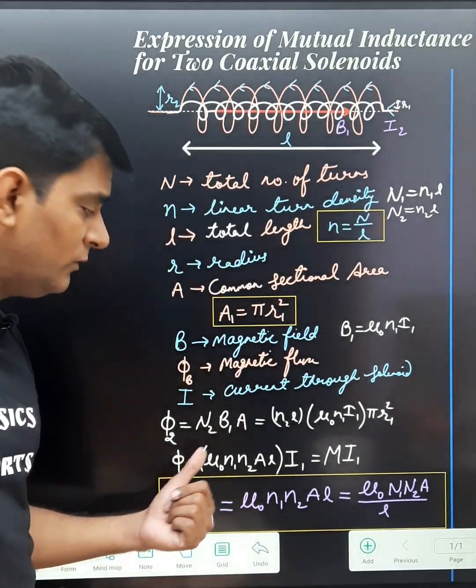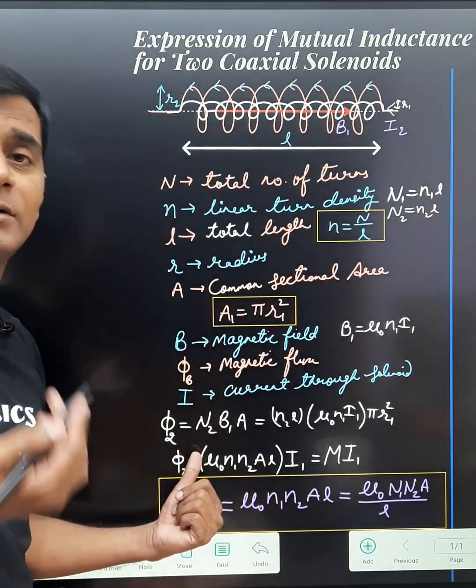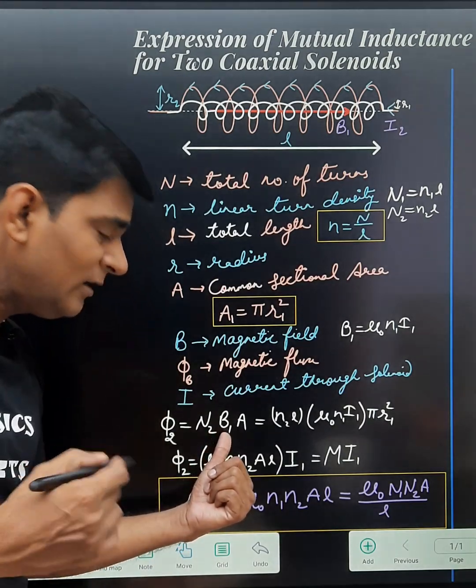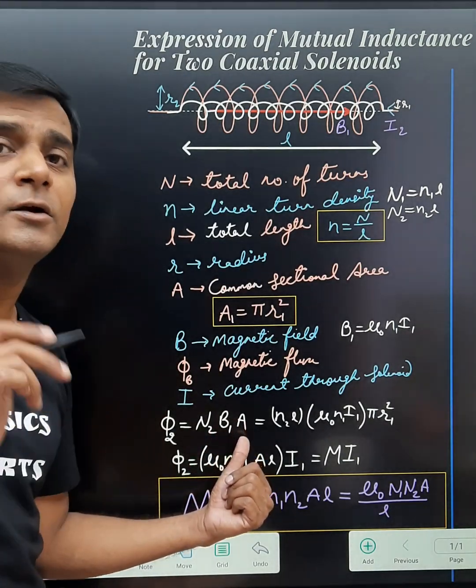So we can write φ2 equals to N2 B1 A, number of turns of the secondary coil, the magnetic field produced due to the primary coil current, and area is taken common.